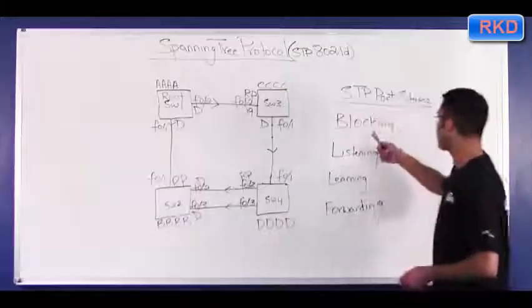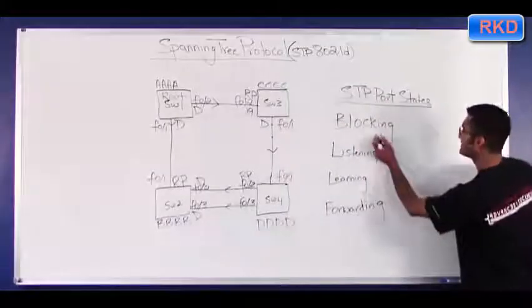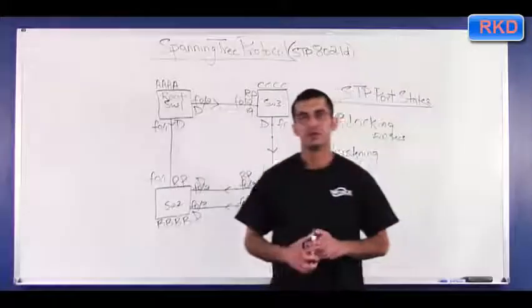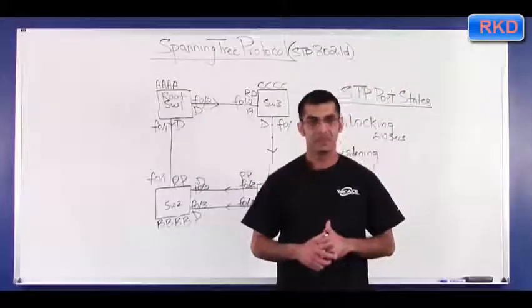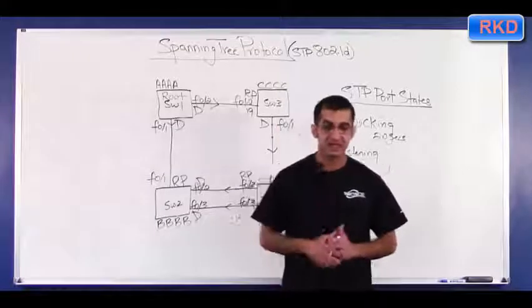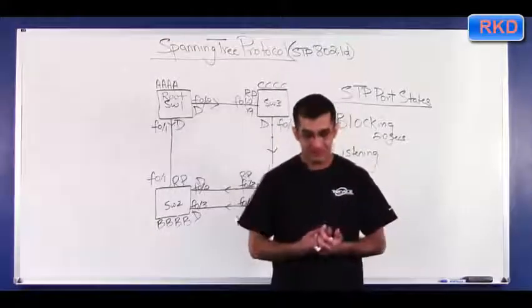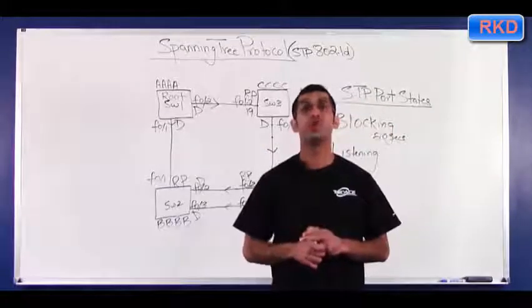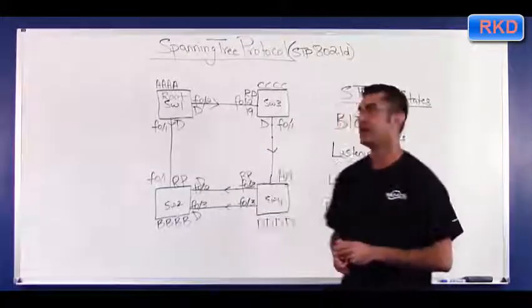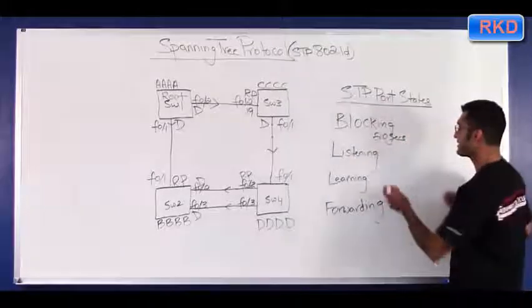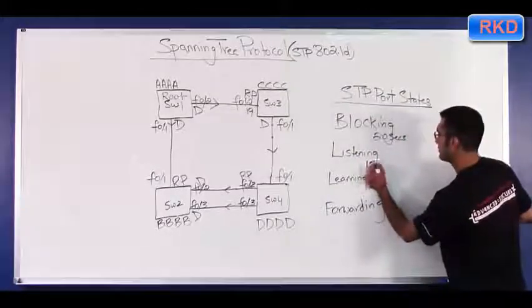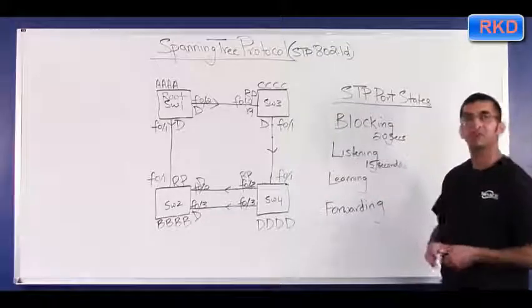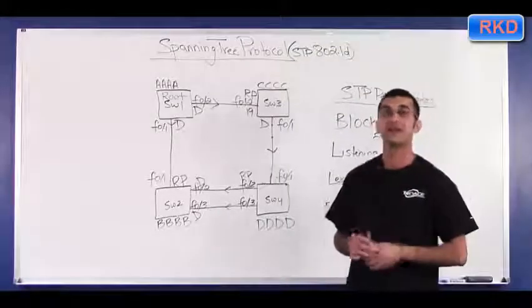And this state lasts for 20 seconds. Next, you move over to listening. During listening, you are sending and receiving BPDUs. Your root bridge election is happening and your root port election is happening. And your listening stage lasts for 15 seconds. This 15 second timer is also known as the spanning tree forward delay.